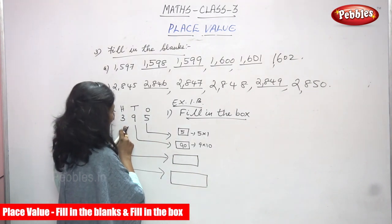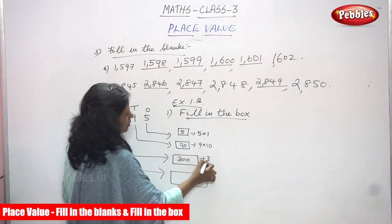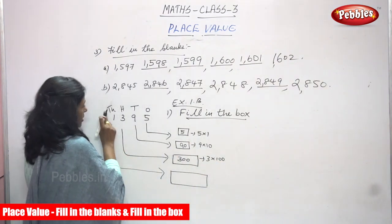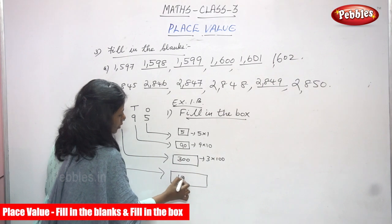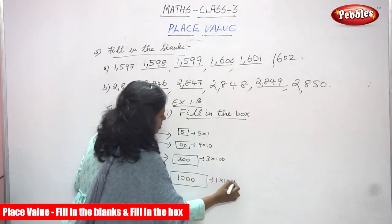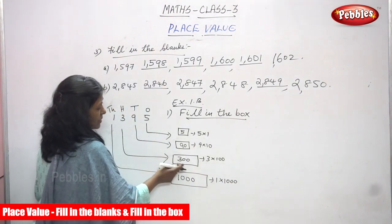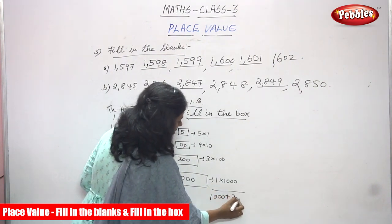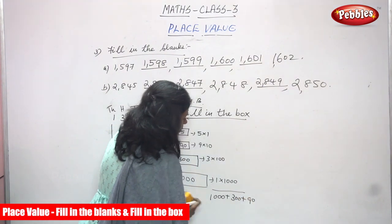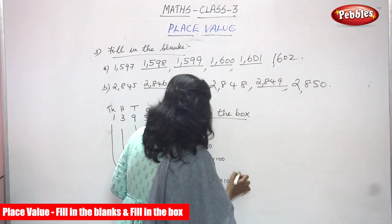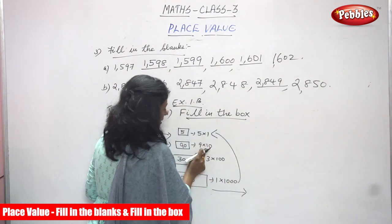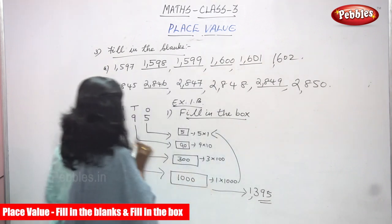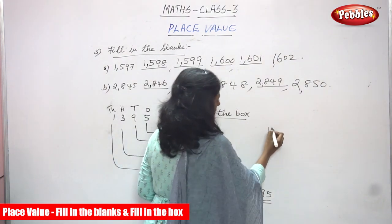And what is the number in the hundreds place? 3 — that is 300. So 3 into 100, you get 300. Next, what is the number in the thousands place? 1 — so 1000. So 1 into 1000, you get 1000. So 1000 plus 300 plus 90 plus 5. That is 1395. This is the right answer for the question. If you don't know, you have to add and do it.